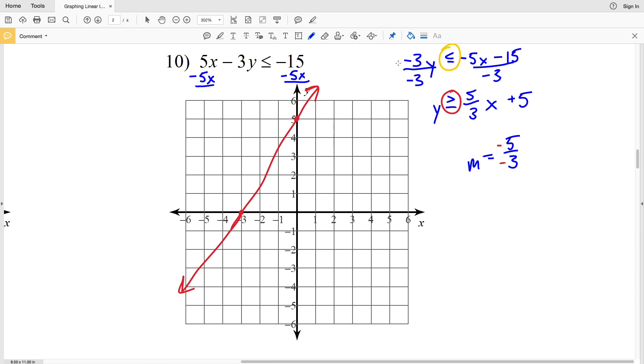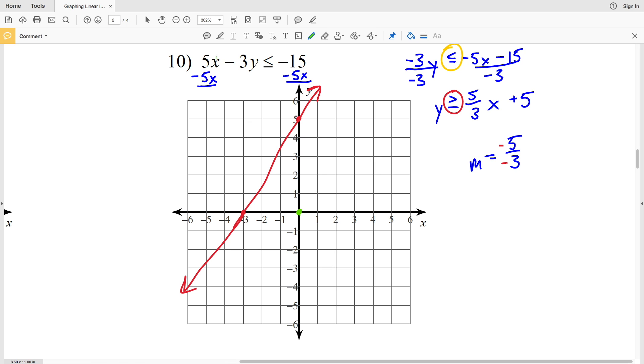Now we just need to use the test point. Let's use 0, 0. You can plug that test point into the original inequality or the new one. Let's plug it into the original since it'll be easier. If we plug in 0 for X and 0 for Y, 5 times 0 is 0, 3 times 0 is 0, so we'll be left with 0 on the left hand side less than or equal to negative 15 on the right. Is that true? No, 0 is greater than negative 15. So we're not going to shade in the region that includes 0, 0. We're going to shade in the other region.